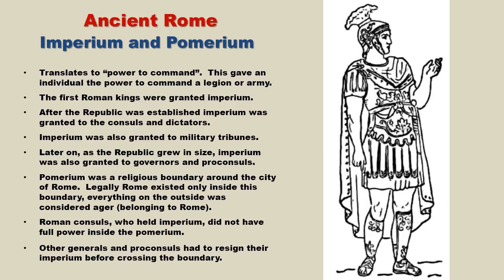That is actually the law that Julius Caesar broke when he crossed the river Rubicon. He had been originally granted Imperium for Gaul, but not Italy. So when he crossed the Rubicon, that is the law he broke, because he was not assigned Imperium for Italy.